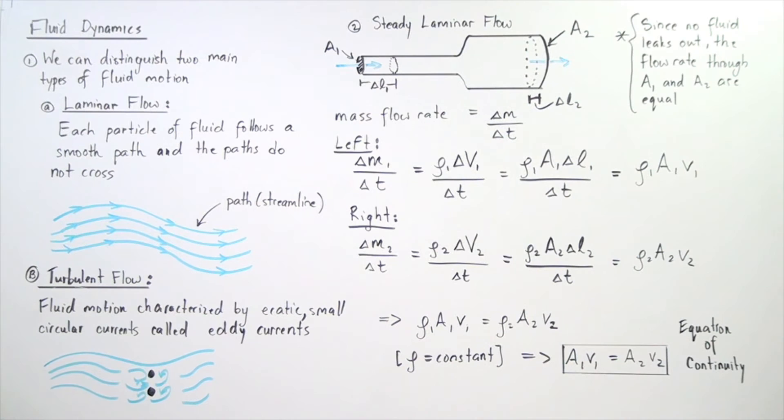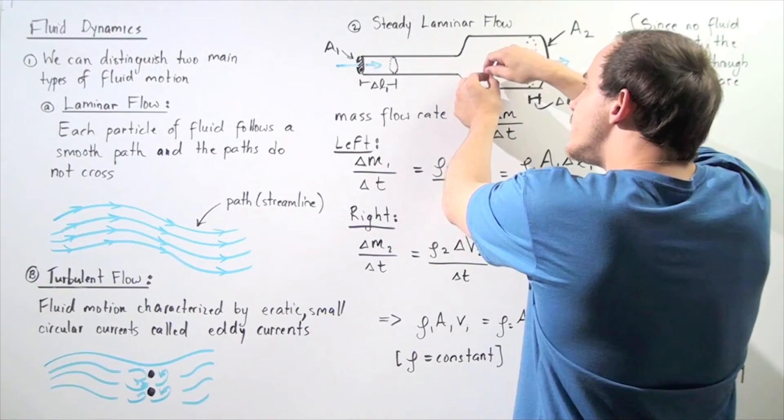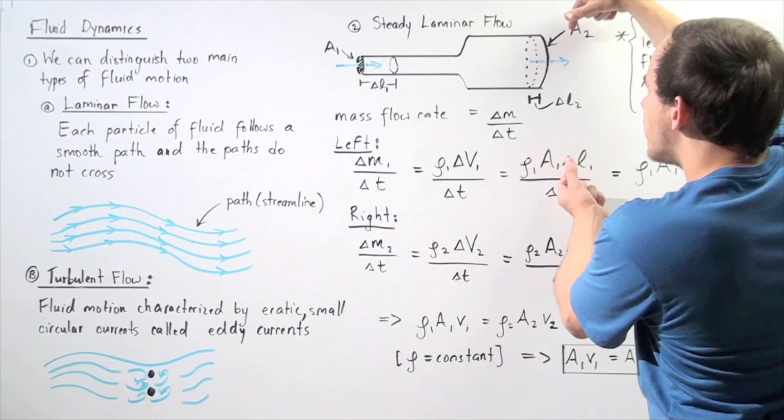The equation of continuity tells us that if a pipe has a certain cross-sectional area at a certain velocity and we expand the cross-sectional area, the velocity will decrease. Likewise, going from a large cross-sectional area to a small cross-sectional area, the velocity of the fluid will increase.